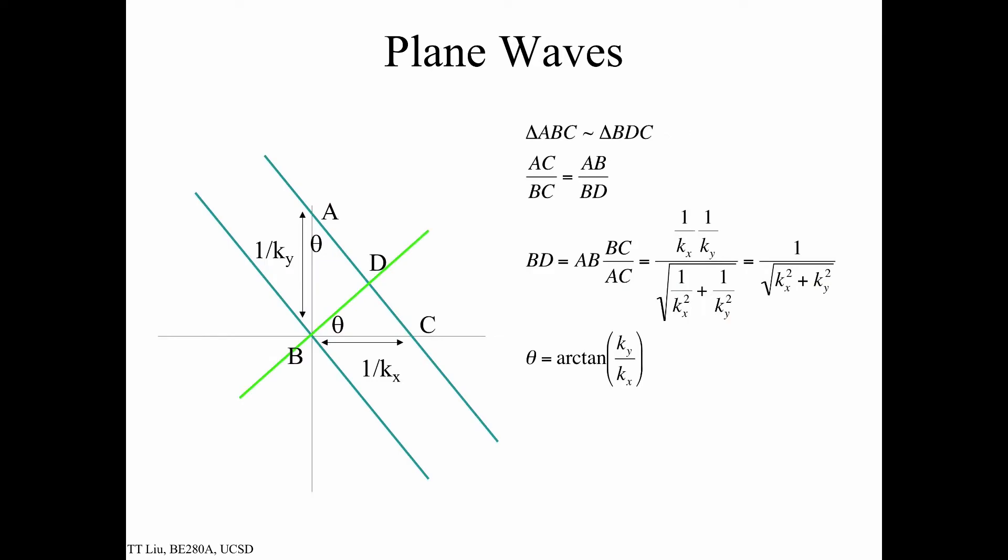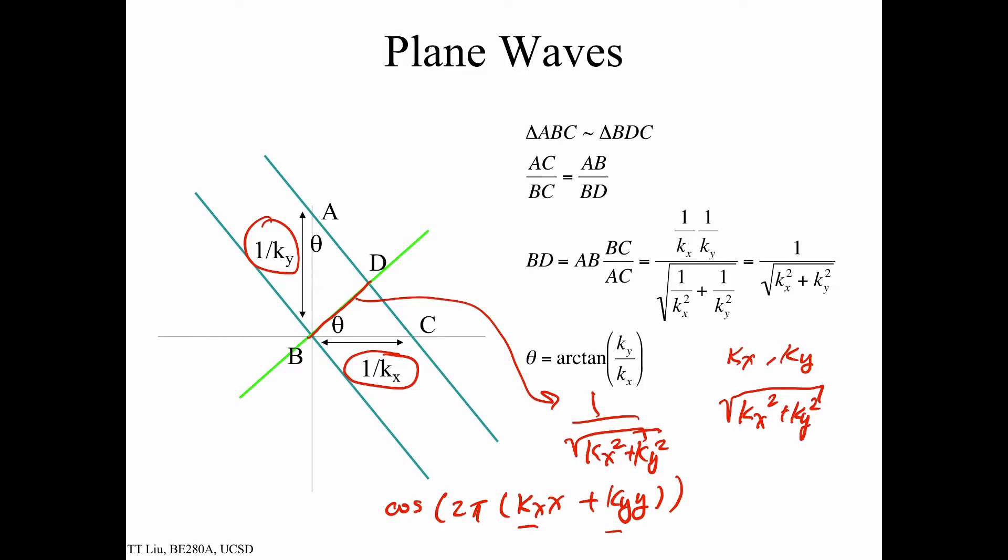This is shown here where, for example, we're looking at something of the form cosine 2π(kx·x + ky·y). And so it has a variation: the period is 1 over kx in the x direction and 1 over ky in the y direction. And it turns out that this period here is given by 1 over square root of kx squared plus ky squared. We'll talk about this later in another module, but an easy way to remember this is if I have both kx and ky as my spatial frequencies, then that gives rise to an overall spatial frequency given by the Pythagorean theorem.